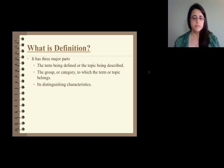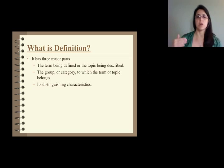So what is definition? The first thing to understand is that definition has three major parts. The first one is the term being defined or the topic being described. We've been talking about the structure of topic sentences, and we know that each topic sentence has to have the topic. It must also include the group or category to which the term or topic belongs, which gives your reader a basis to begin to organize understanding of a concept. If you said a feline is an animal and go further into detail, you have a better chance of making yourself clear.